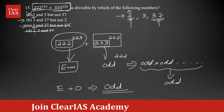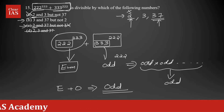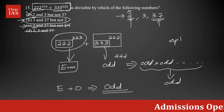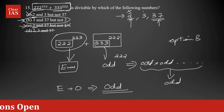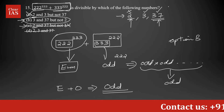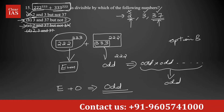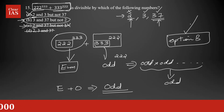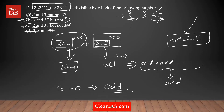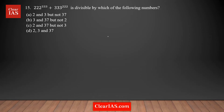The only option left is option B, so that's the right answer. You can solve this in less than a minute without even needing the divisibility rules of 3 or 37. Eliminating options at this stage is enough to confidently mark option B. For further understanding, let's also verify the divisibility rule of 3 and 37.